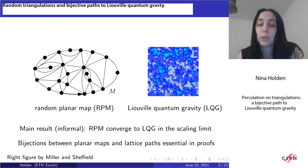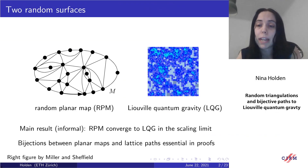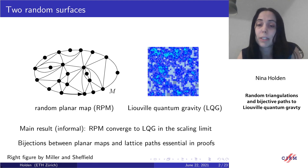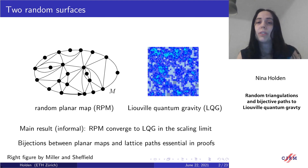In this talk we will be looking at two models for random surfaces: random planar maps and Liouville quantum gravity. Informally speaking, the main result I want to present is that the random planar map is converging in some sense to Liouville quantum gravity when its size is going to infinity. This topic is relevant for this conference because bijections between planar maps and lattice paths play an essential role in the proofs.